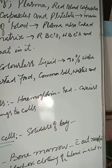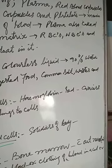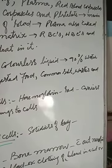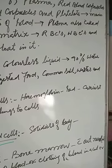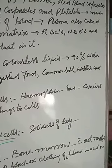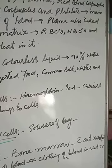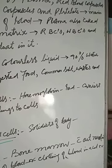Plasma also contains dissolved substances such as proteins, digested food, common salt, waste products like carbon dioxide and urea, and hormones. Plasma carries all these dissolved substances from one part to another part in the body.